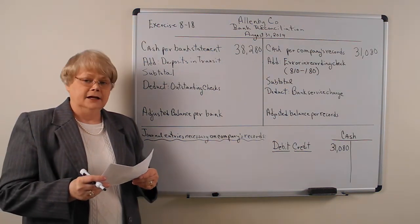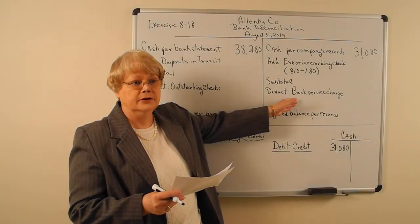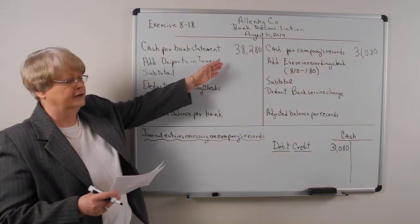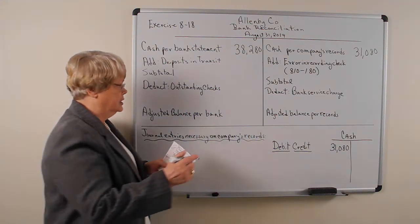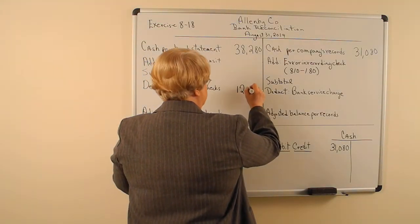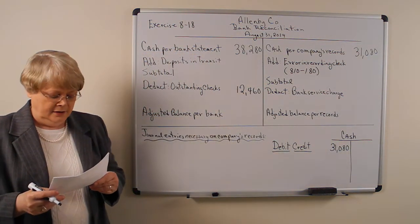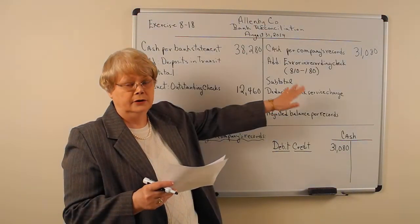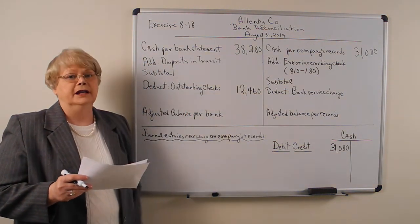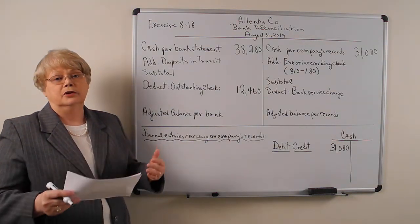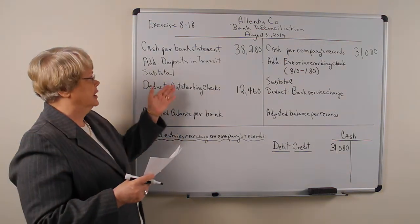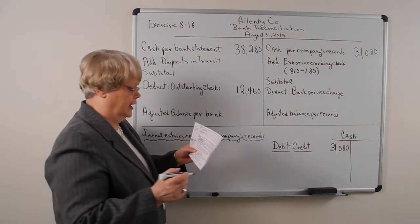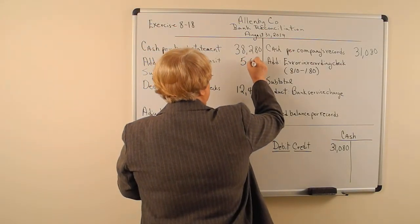The next item is checks outstanding. You may have written some checks that have already been recorded on your books, but they have not yet come to the bank and cleared. When they do clear the bank, they will be deducted from the bank balance, so we need to deduct them here. Checks outstanding is $12,460. The next item is a deposit in transit not recorded by the bank — you would have already recorded it in your check register, but the bank hasn't recorded it yet. When it clears, it will be added to the bank balance, so we add the deposit in transit of $5,850.